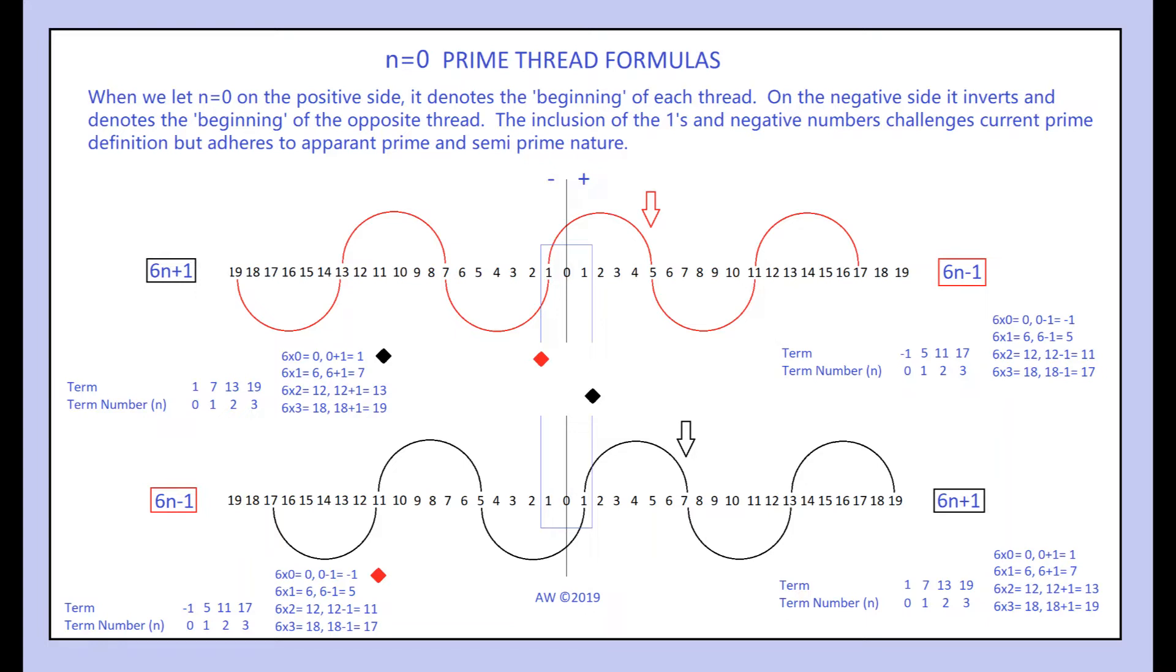These are reversed in the negatives, so when n equals 0 on 5's negative side, it gives us 1 because that's what the positive side of 7's thread gave us. When n equals 0 on the negative side of 7's thread, we get negative 1 from 5's thread.